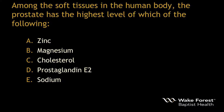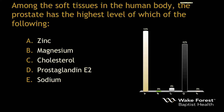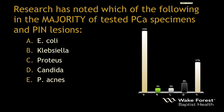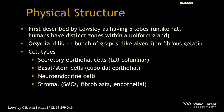Audience response question: Among the soft tissues in the human body, the prostate has the highest level of which of the following? Choices are zinc, magnesium, cholesterol, prostaglandin E2, and sodium. The answers people chose were zinc and prostaglandin E2 — very interesting. Second question: Research has noted which of the following in the majority of tested prostate cancer specimens and prostatic intraepithelial neoplasia lesions — E. coli, Klebsiella, Proteus, Candida, or Propionibacterium acnes?